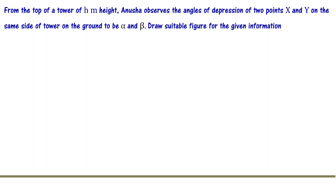From the top of a tower of h meters height, Anusha observes the angles of depression of two points X and Y on the same side of the tower on the ground to be alpha and beta. Draw a suitable figure for the given information.